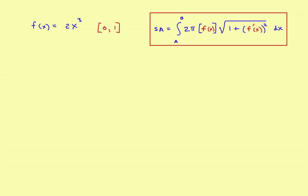Two things you're going to need: the original function and the derivative. My suggestion is, in the very first step, go ahead and find the derivative. So step one: find f'(x). In this case it's easy — just take the derivative. f'(x) equals 6x².